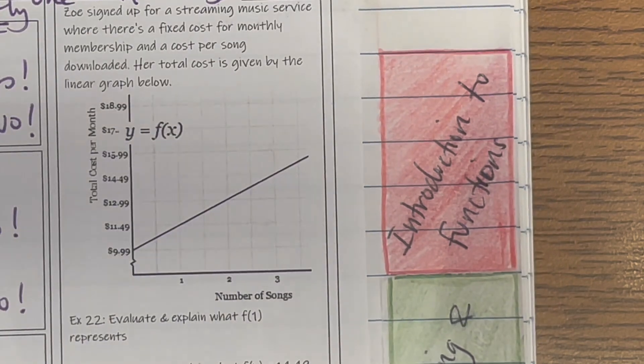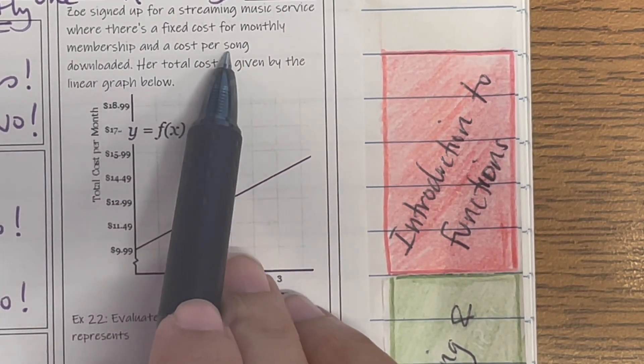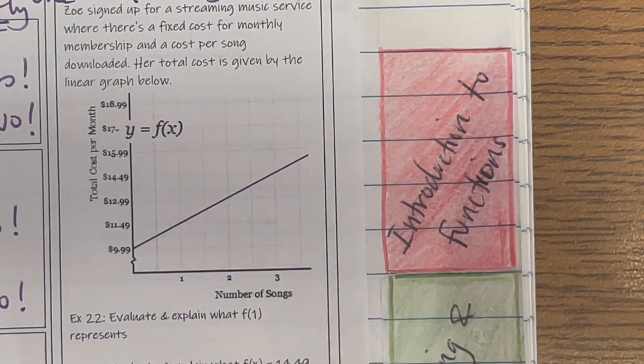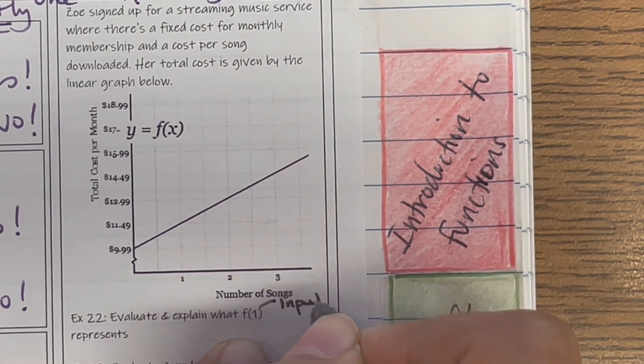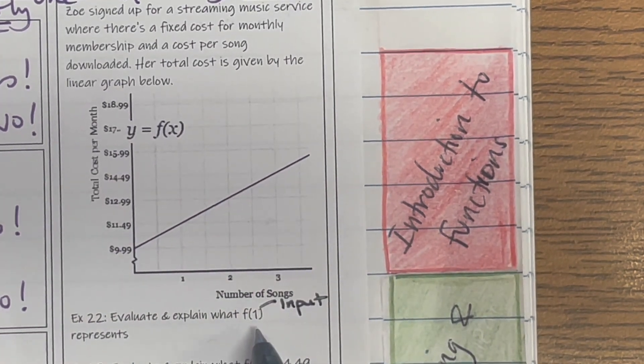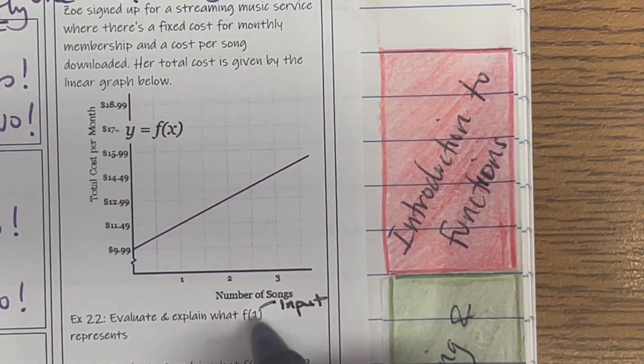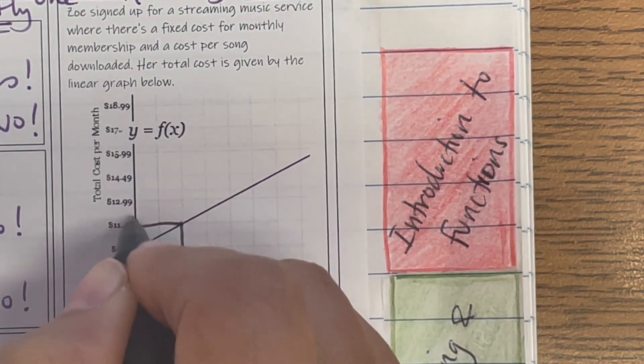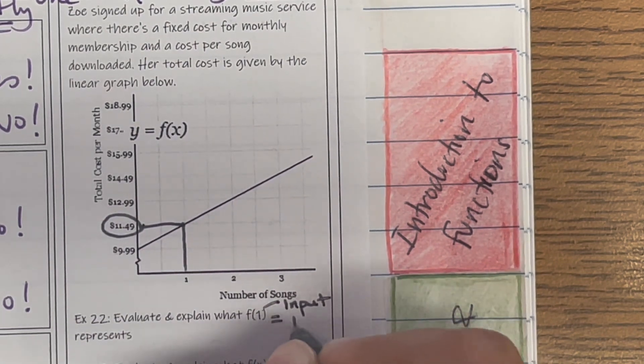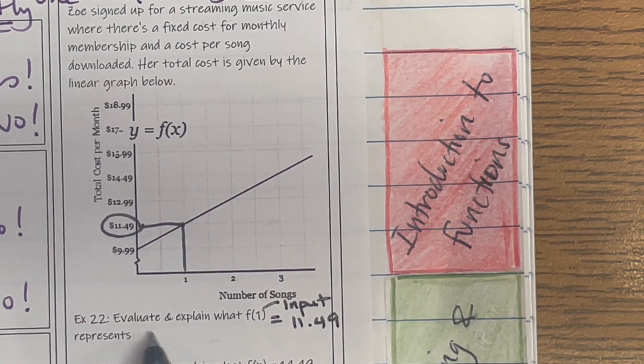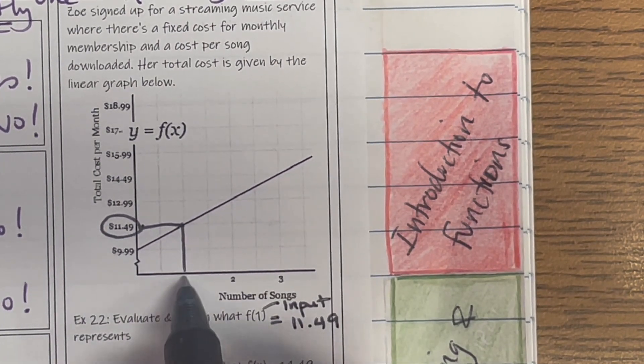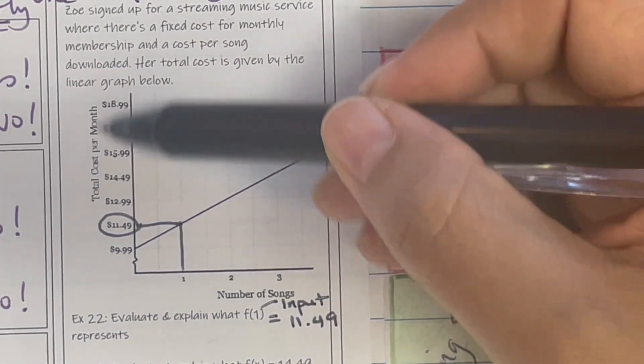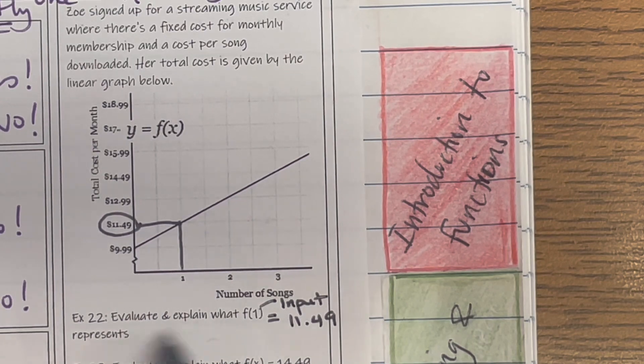So Zoe signed up for a streaming music service. There's a fixed cost for monthly membership and a cost per song downloaded. The total cost is given by this linear function below. Evaluate and explain what F(1) represents. So again, remember 1 is my input. What am I putting in? So first let's evaluate it. So remember this is going to be your X value, your output is going to be your Y value. So my X value, 1, gives us $11.49. So I evaluated F(1). When X is 1, I get out $11.49. Now I just need to read what it talks about. So this is the number of songs, this is the total cost per month, and who's this? Zoe.